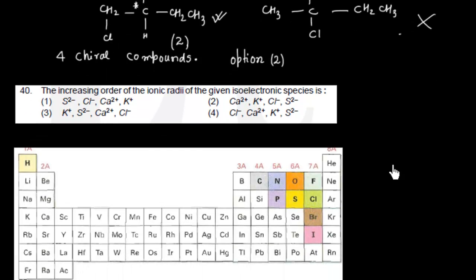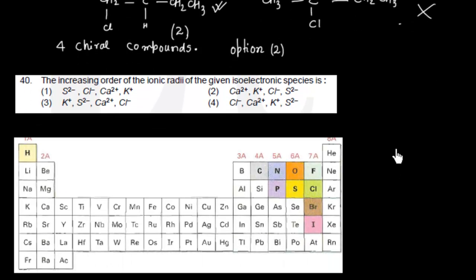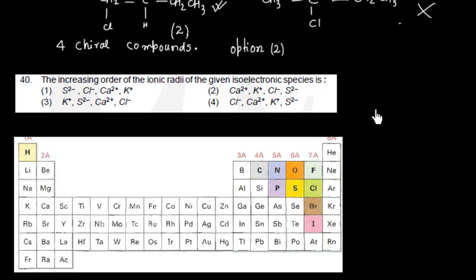Now let us discuss the next problem. The question asks for the increasing order of ionic radii of given isoelectronic species. Isoelectronic species are those in which the number of electrons is the same.